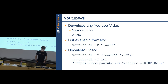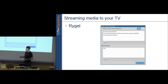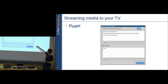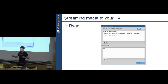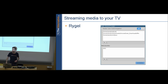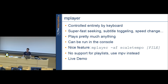Rygel is a DLNA media server. Install it, specify what folder to share and which network interface (e.g., your wireless interface), and your DLNA-capable TV will see your laptop as network storage for immediate streaming. A good wireless connection is important for high-resolution content.